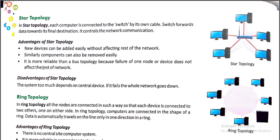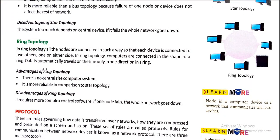Next is Ring Topology. In ring topology, all the nodes are connected in such a way that each device is connected to another on either side, and the computers are connected in the shape of a ring. Data automatically travels along the line in only one direction. There is no single central computer. It is more reliable in comparison to star topology.